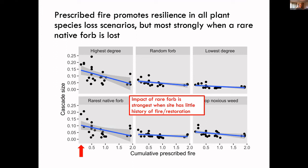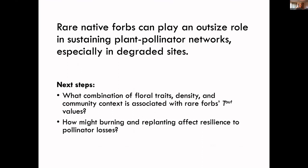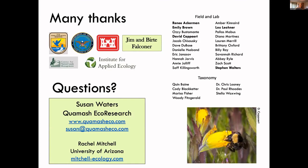This was a very interesting and unexpected result. To restate: rare native forbs can play an outsized role in sustaining plant-pollinator networks, especially in degraded sites. Our next steps are to look at what combination of floral traits, density, and community context causes these rare forbs to have such a strong effect — we think they likely offer floral traits not provided by other species in these depauperate sites. We also want to ask how burning and replanting might affect resilience to pollinator losses. Thank you to all my funding organizations, field, lab, and taxonomy crews.